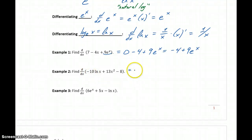In example 2, here negative 10 is, again, a constant multiple, so we can just focus on differentiating the natural log of x by itself. So we'll get negative 10 times 1 over x plus 26x minus the derivative of 8 will just be 0. So we get negative 10 over x plus 26x.